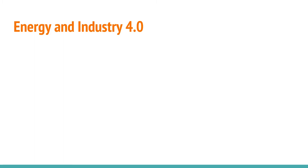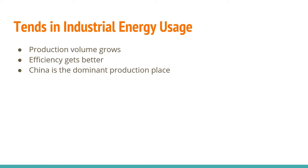In this lecture we look into energy and industry. Industry is the main consumer of energy, and we will learn how this happens and what parts of industry use a lot of energy. The production of goods is a constantly growing thing in our industrialized society. We will see that efficiency of producing goods gets better and better, but it is eaten up by the volume of products. We will also learn that China is a very dominant production place.